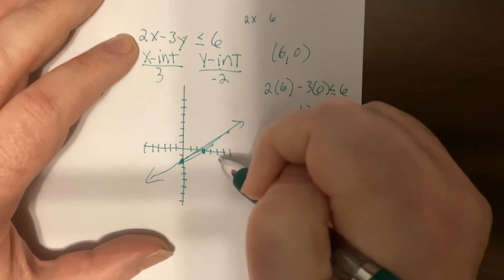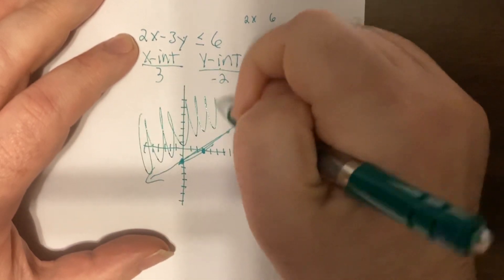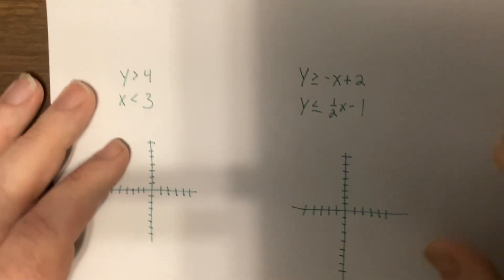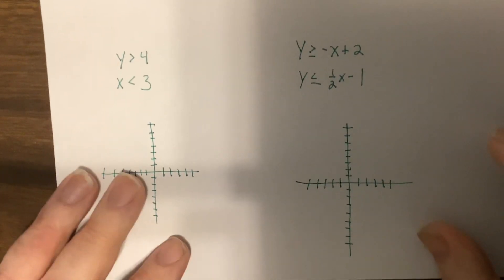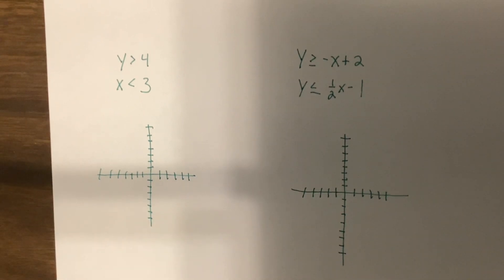So this is false on this side, so it'd be the other side. Now we have systems of inequalities. Do you remember how to do this? So again, freeze the video here. Do these two problems. Then turn it back on.